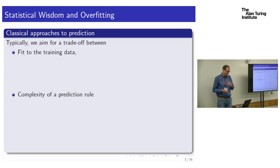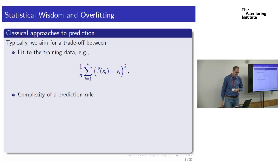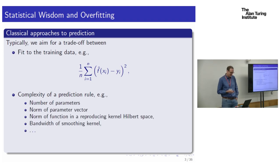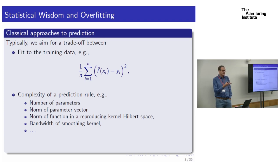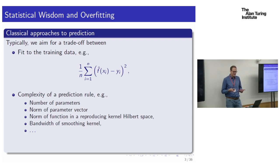Classically, we aim for some kind of trade-off between fit to the training data and the complexity of a prediction rule. We might consider the quadratic loss on a sample of size N, where F-hat of X_i is the prediction on example X_i. We want to trade off that quantity with the complexity of F-hat — measured in terms of number of parameters, scale of parameters, norm in a function space, or bandwidth of a smoothing kernel. We're always in this situation of trading off between fit to the training data and complexity of the prediction rule.